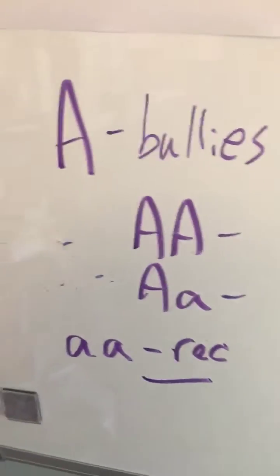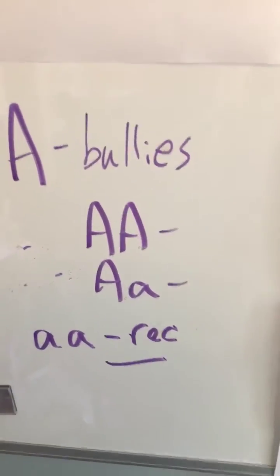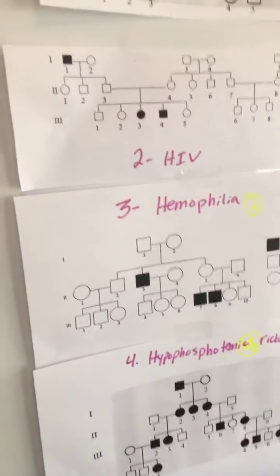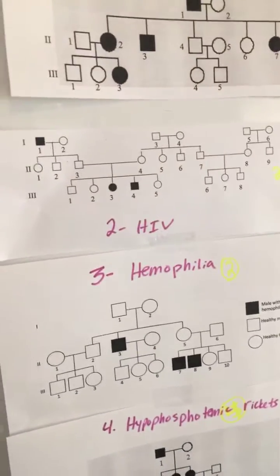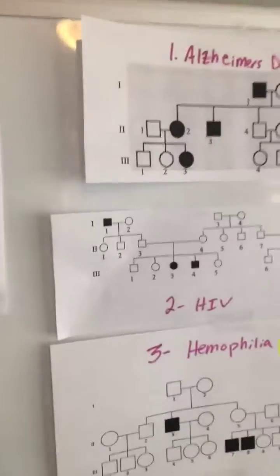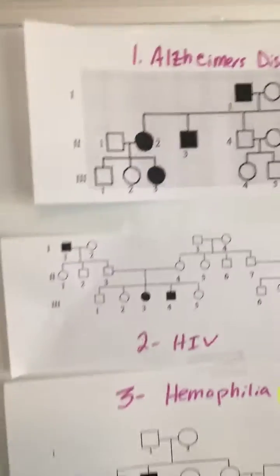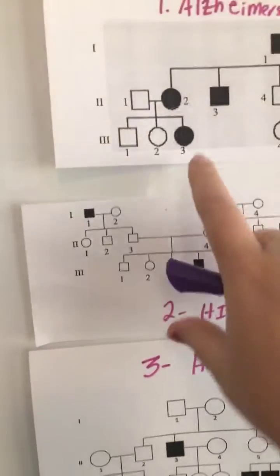When we look at pedigrees, the first thing I like to determine is whether it's going to be dominant or recessive, because by doing that we're going to be able to eliminate half the possibilities. We're going to look to see if a kid has a trait and the parents do not.